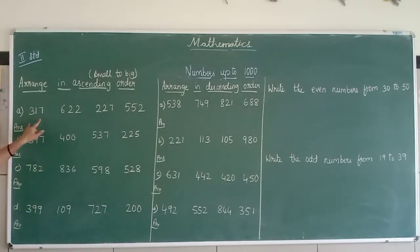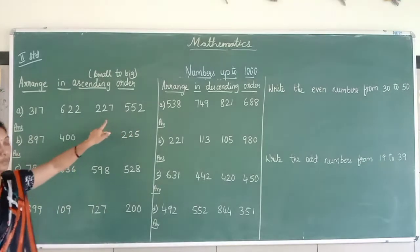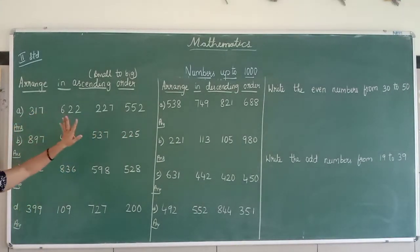Now, before I start with this, let me see all the digits here. It is 317, 622, 227, and 552. As I said you, it will be from smallest number to the biggest number. Which is the smallest number in this? See when you have a doubt...